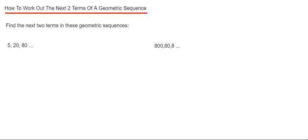Let's have a look at the first example. We've got the sequence 5, 20, and 80. What I'm going to do is divide the second term by the first term. So 20 divided by 5 is 4. So the common ratio of our sequence is 4.